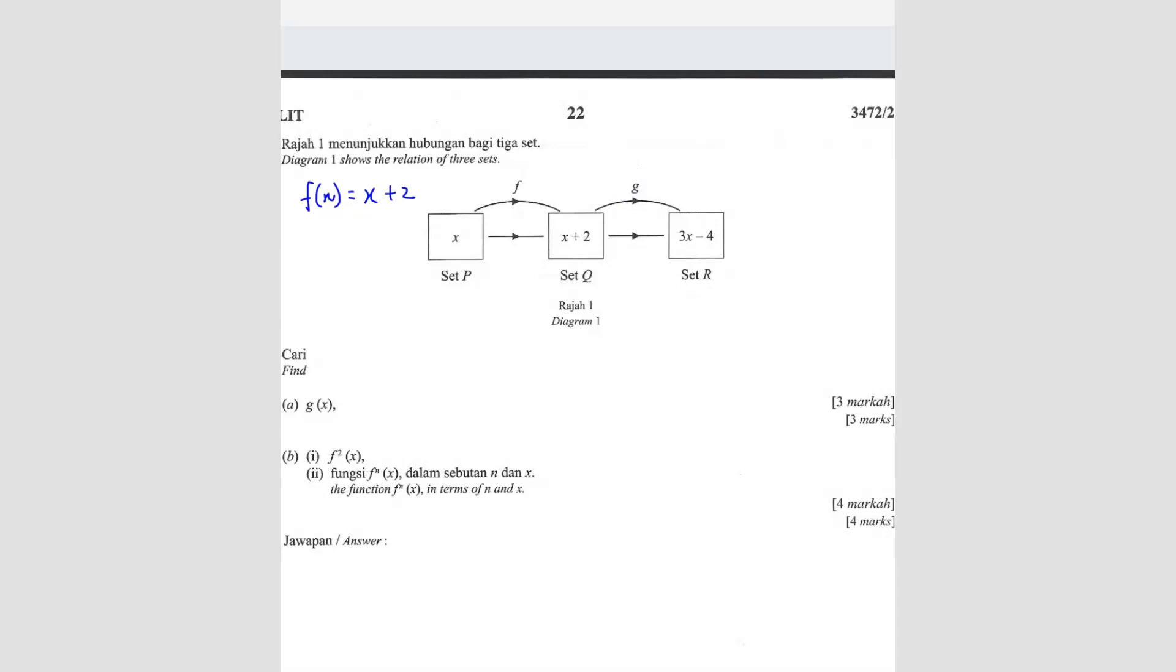So this is not gx. If you write gx equals to 3x minus 4, your answer is wrong. This part here is wrong. Because this is not gx.